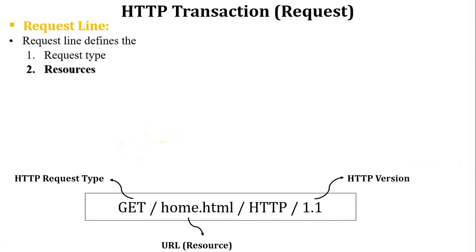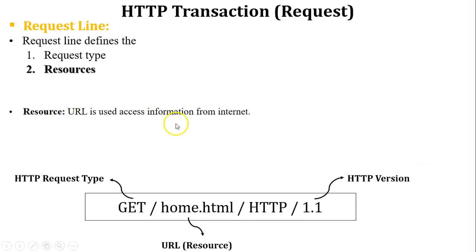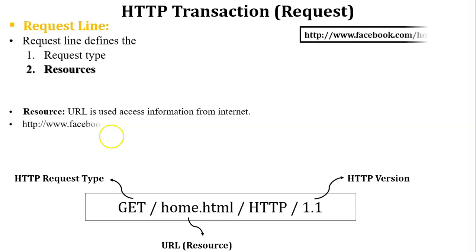The next component is resource. Here the URL is used to access information from the internet. Let us take one example to understand the URL — here is the example of a URL.